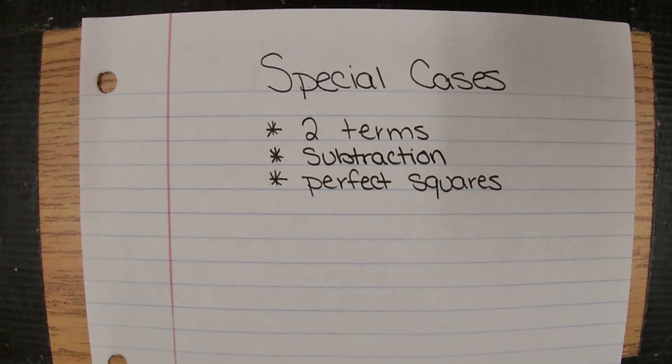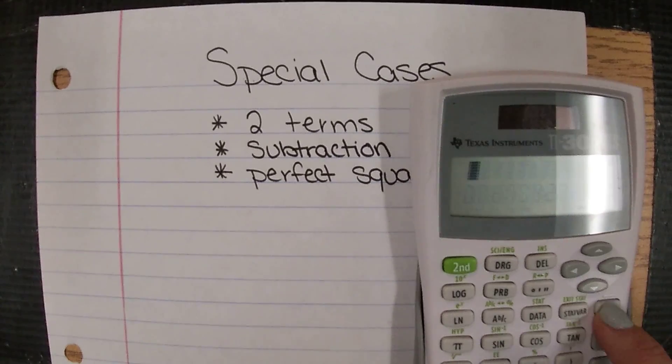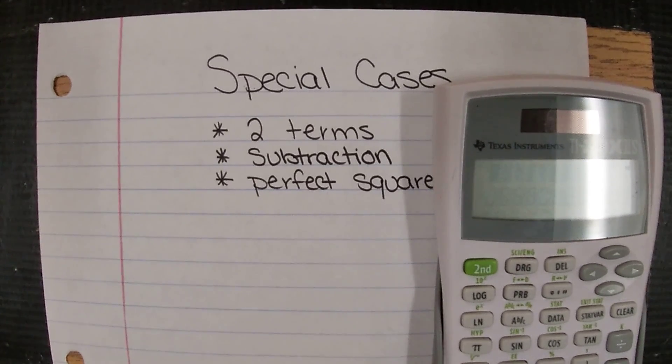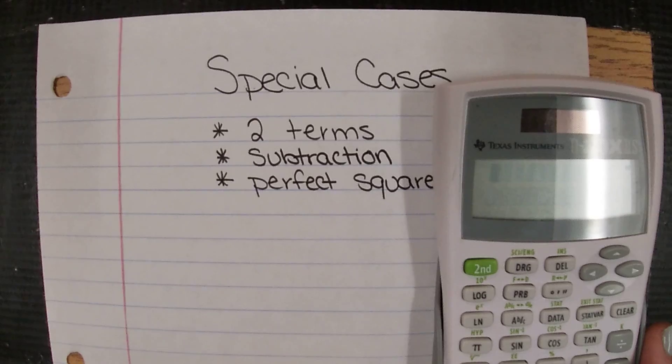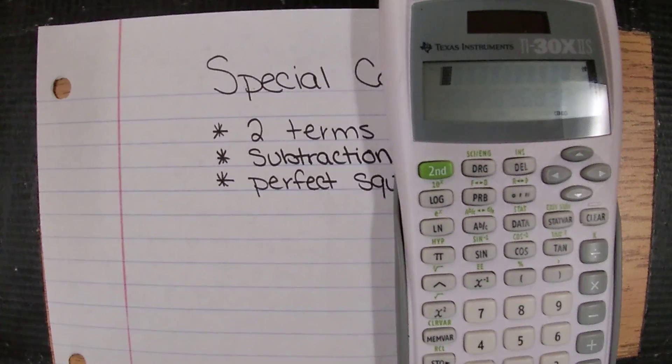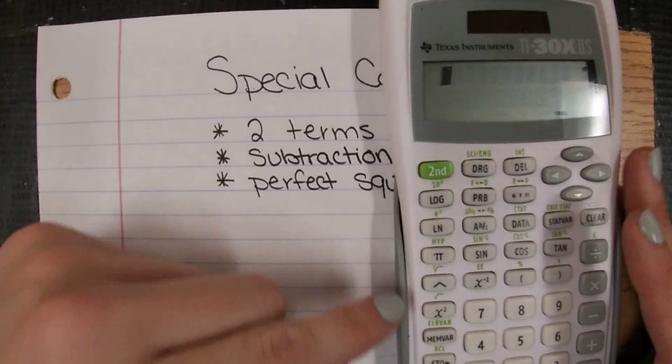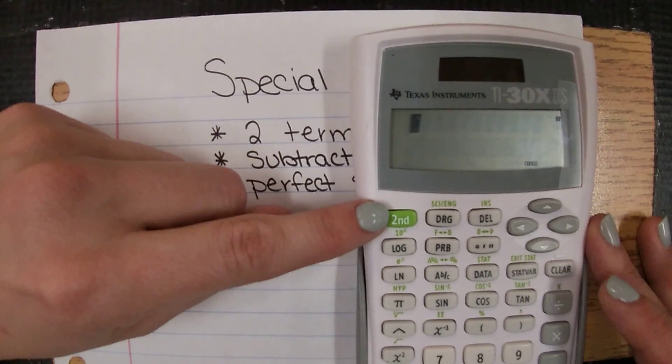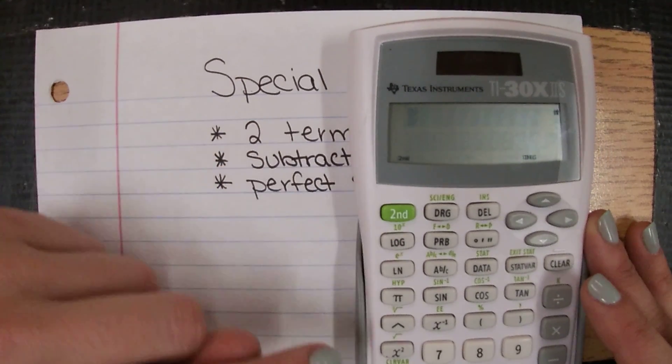I do not expect you to recognize every perfect square, so if you're not sure, we can use our calculator to help us. The way we do that is by taking the square root of a number. Our square root button is in the light writing above the x squared button. To access anything in the writing above it, we have to hit the second button, so we would hit second and then x squared.